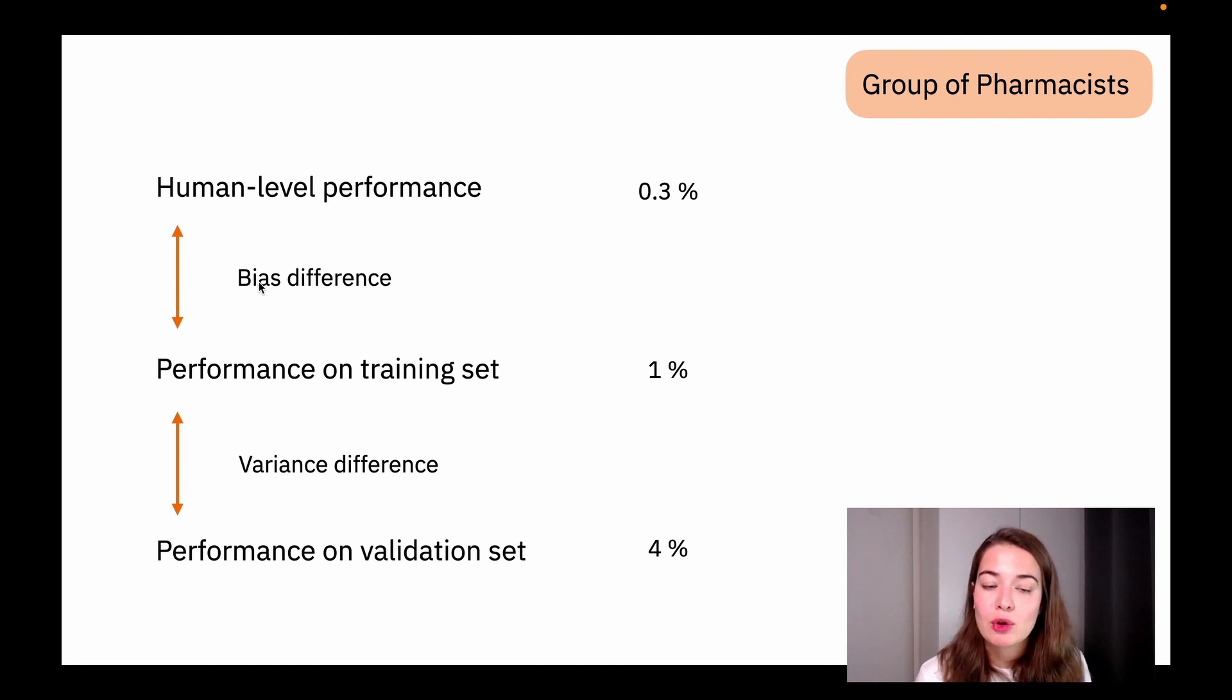So at this point, we have to stop and think what to spend time on. Are we going to spend time on lowering the bias difference? Or are we going to spend time on lowering the variance difference? Because the solution to each of them are a little bit different. If you are trying to lower bias, you're going to try different things. If you are trying to lower variance, you're going to try different things.